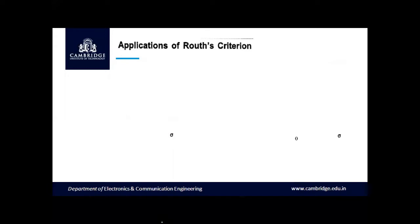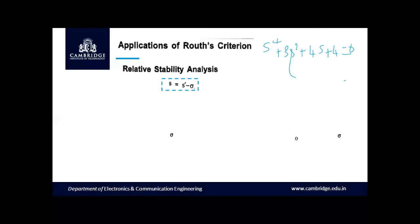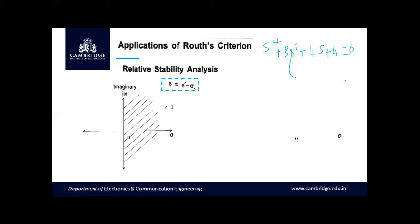Let us understand the meaning of relative stability analysis. For a given characteristic equation, for example s⁴ + 3s³ + 4s + 4 = 0, we generate a Routh array and inspect sign changes in the first column. If all roots are in the left half of the s-plane the system is stable; if roots lie in the right half it is unstable; if roots are on the imaginary axis the system is marginally stable. This is with reference to s = 0, i.e., the origin.